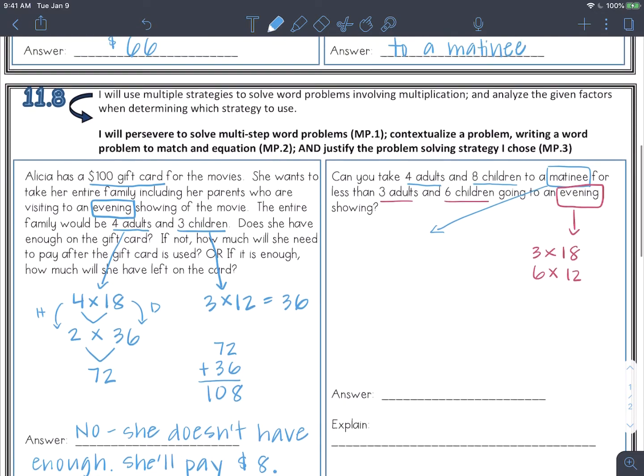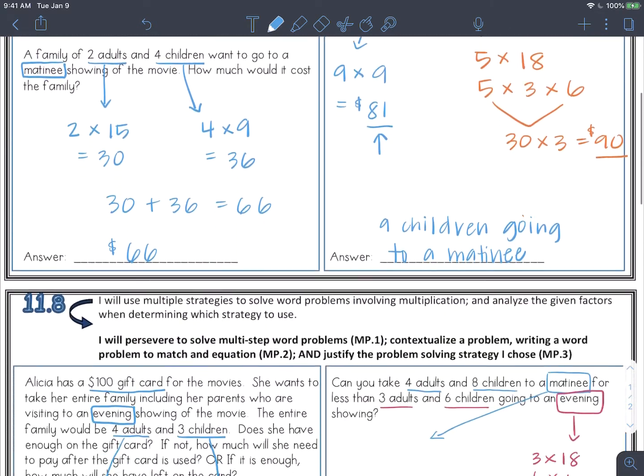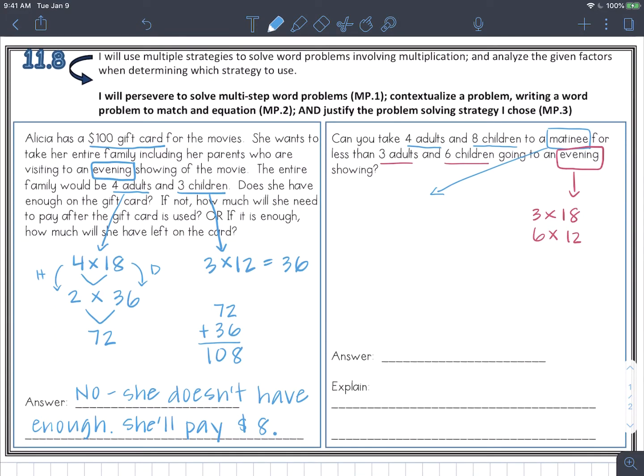For the matinee, we can go back and check our prices, $15 and $9. So for the four adults, four times 15. For the eight children, eight times nine. Now you're ready to do all your multiplication.